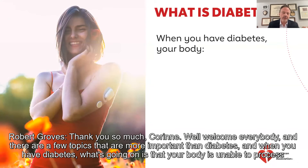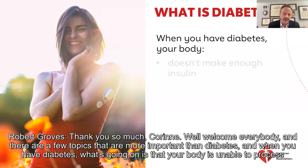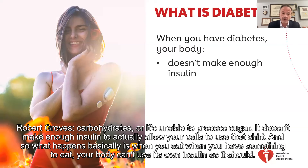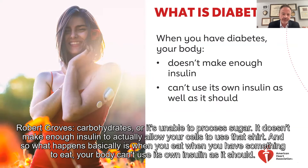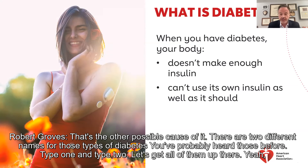Thank you so much, Corinne. There are few topics that are more important than diabetes. When you have diabetes, what's going on is that your body is unable to process carbohydrates or sugar. It doesn't make enough insulin to actually allow your cells to use that sugar. So what happens is when you eat, your body can't use its own insulin as it should. That's one possible cause — there are two different names for those types of diabetes.